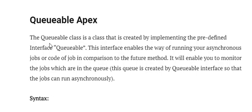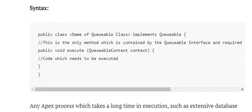The queueable class is created by implementing the predefined Queueable interface. The interface enables an enhanced way of running your asynchronous jobs. In comparison to the future method, it allows you to monitor jobs that are in the queue, which is created by the Queueable interface so jobs can run asynchronously.